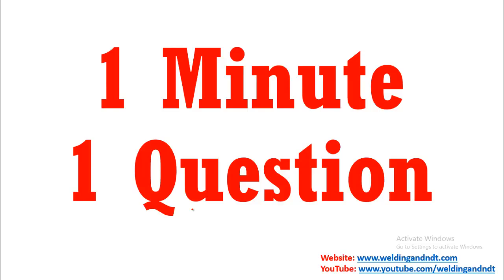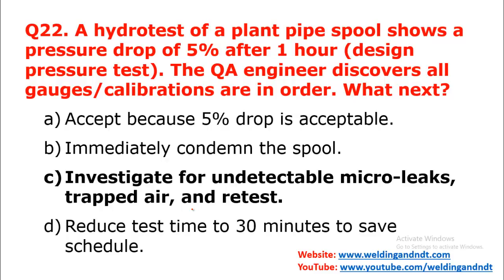Welcome to my channel's '1 Minute 1 Question Answer' series. Today's question: a hydro test of a plant pipe spool shows a pressure drop of 5% after one hour. The QA engineer discovers all gauge calibrations are in order. What next? Option A: accept, because 5% drop is acceptable. Option B: immediately condemn the spool. Option C: investigate for undetectable micro leaks, trapped air, and retest. Option D: reduce test time to 30 minutes to save the schedule.